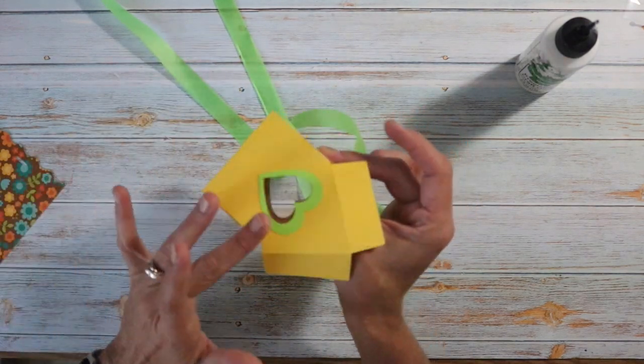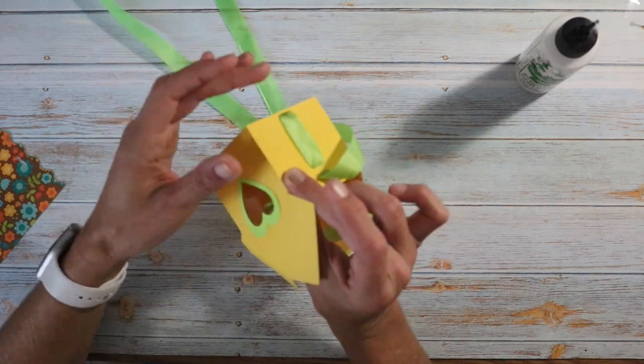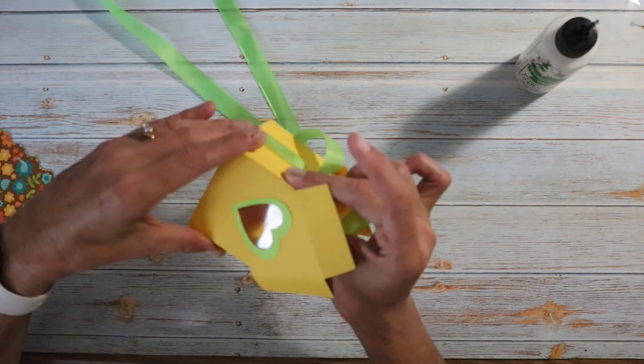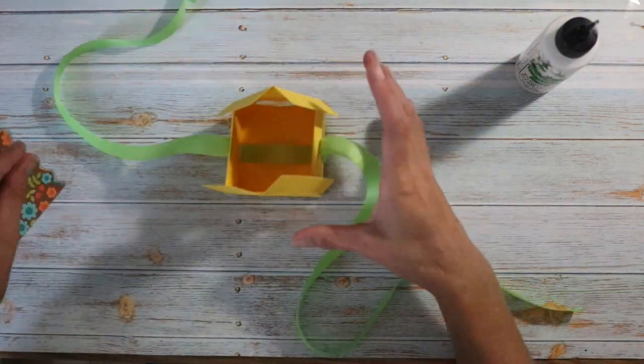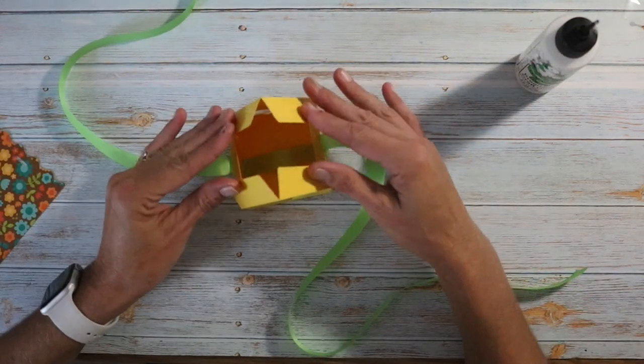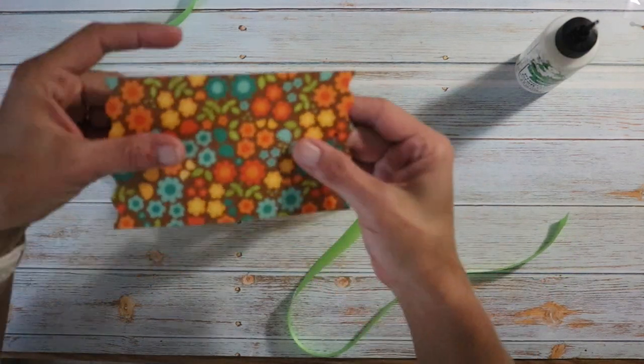Just give that glue a second to kind of grab. You can also stamp on the piece of cardstock for the base of the box to make it be more decorative. All right, there we have it. So separate our ribbon. We already creased these guys pretty good. Just go ahead and sit them there.